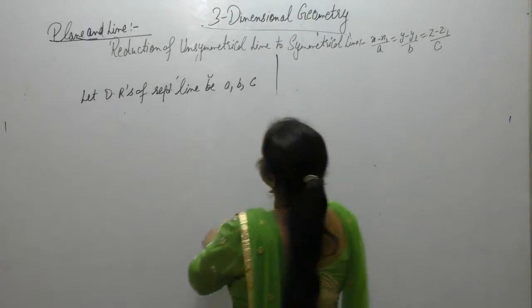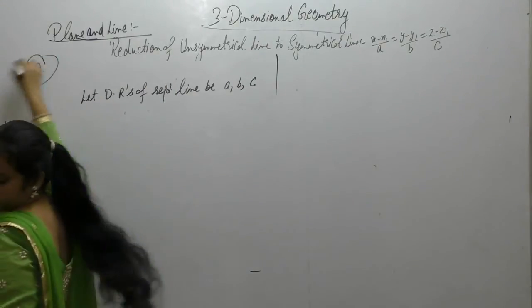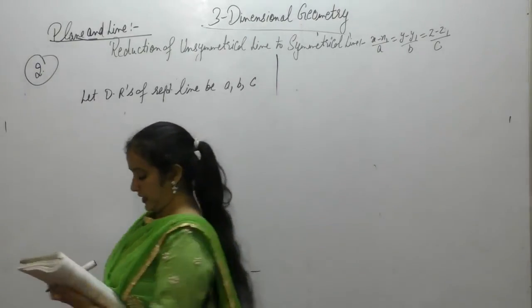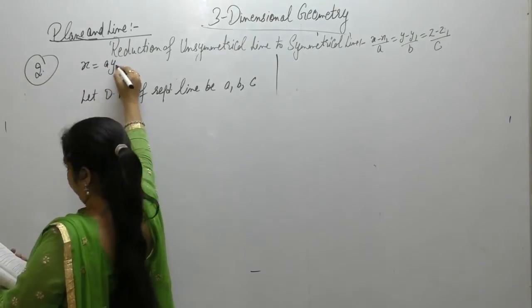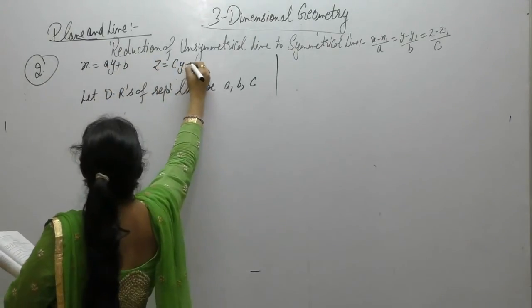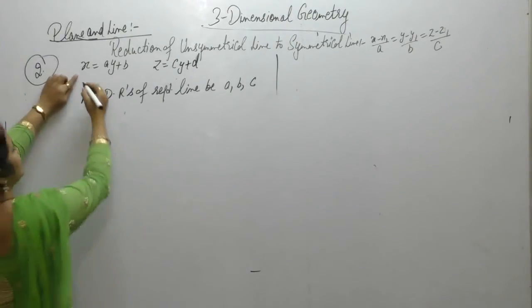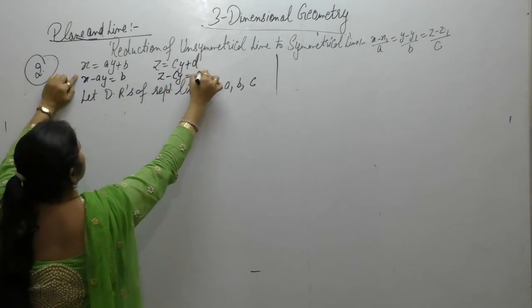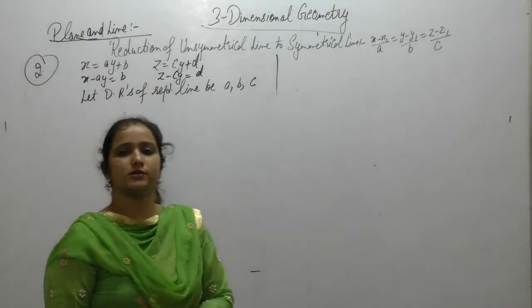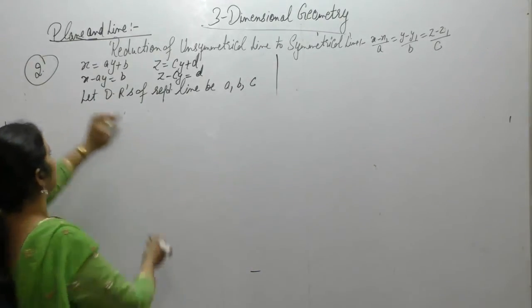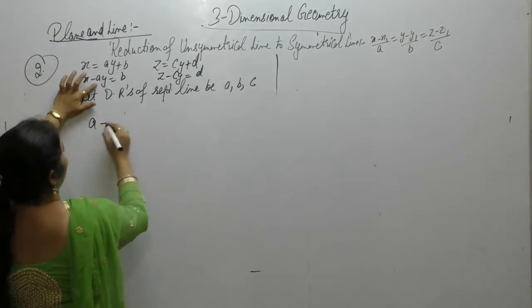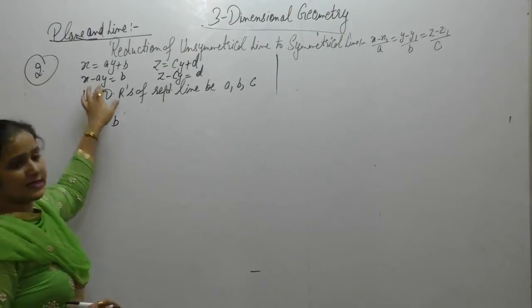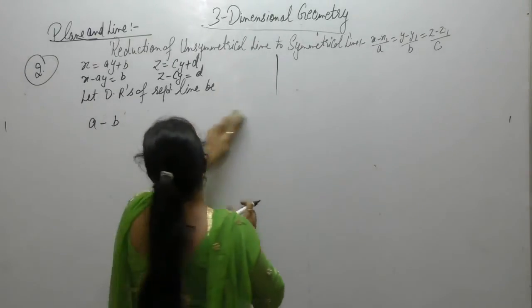Now, the next one is reduce in the symmetrical form the equation of the line x is equals to A y plus B, z is equals to C y plus D. First, write this equation as x minus A y is equals to B, z minus C y is equals to D. Let the direction ratios of the required line be A, B and C. Then A into 1 minus B into, here A, B, C we already have, so let the direction ratios as L, M, M.